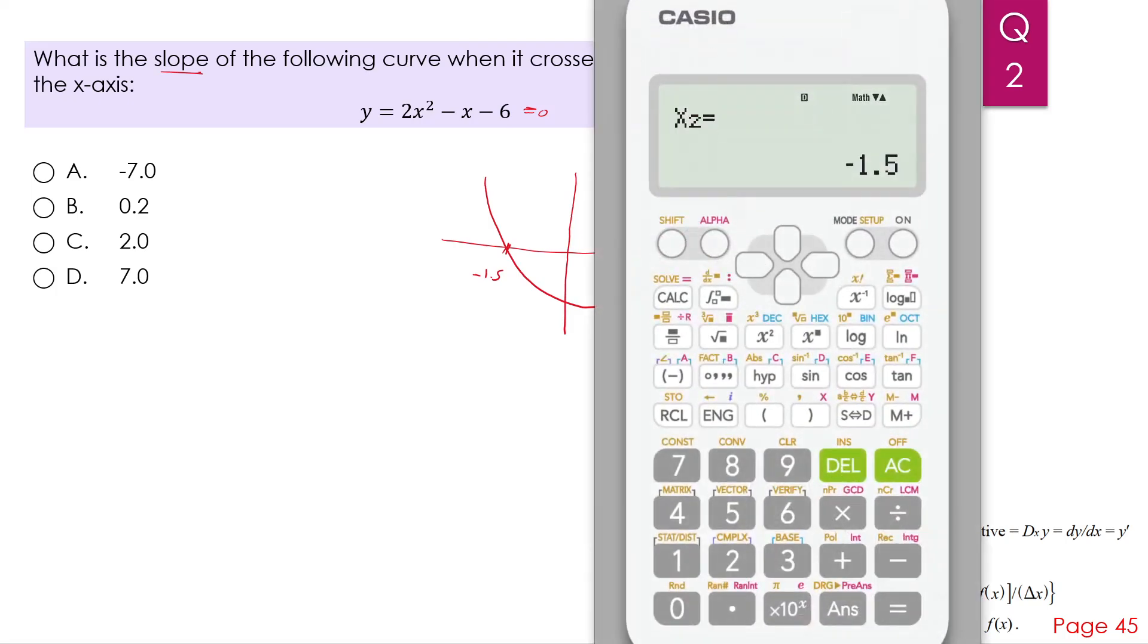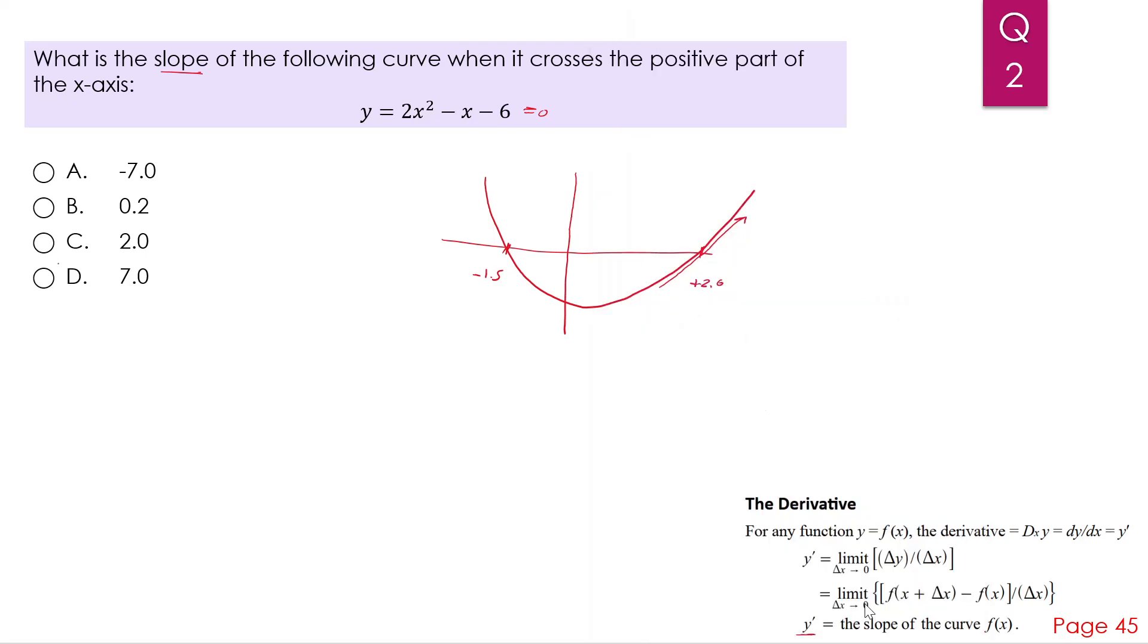So again, simply we can use our calculator. We go back to the computation mode, shift and the derivative sign. And we input 2 alpha x squared minus alpha x minus 6. So we need the derivative when x equals 2. You press equal, and this is 7. So the slope equals 7.